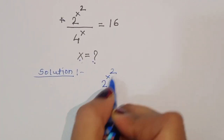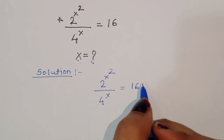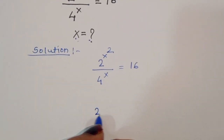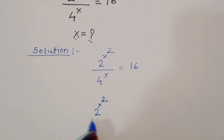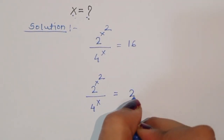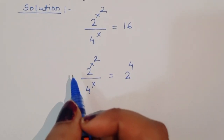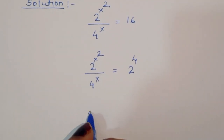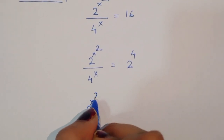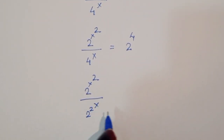We have 2 power x squared divided by 4 power x is equal to 16. We can write 16 as 2 power 4. Now 4 power x can be written as 2 power 2 raised to power x, which is 2 power 2x. So the equation becomes 2 power x squared divided by 2 power 2x is equal to 2 power 4.